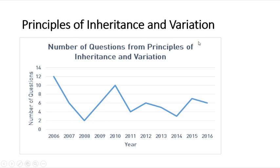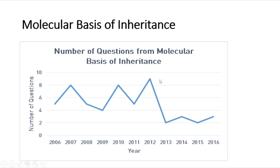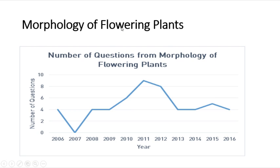Looking at Principles of Inheritance and Variation, in 2016 nearly 6 questions were asked. From the beginning in 2006 it had more questions and gradually decreased with some fluctuations, but it remains very important. For Molecular Basis of Inheritance, last year nearly 3 questions were asked, while in 2012 there were 9 questions.